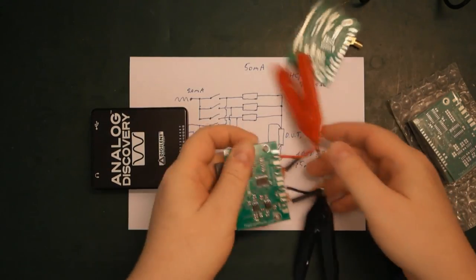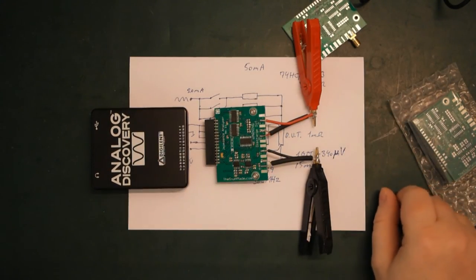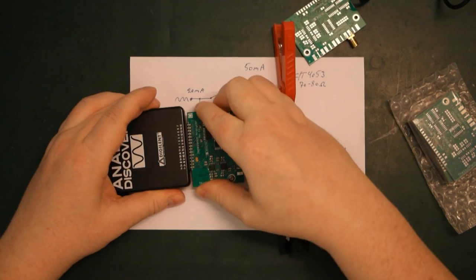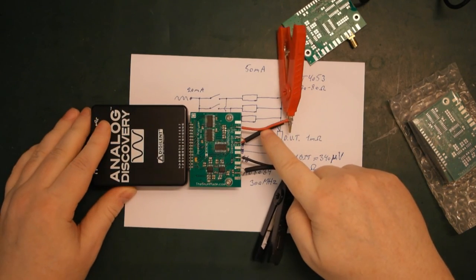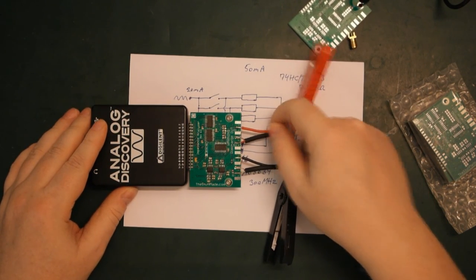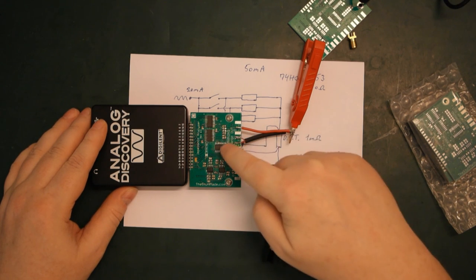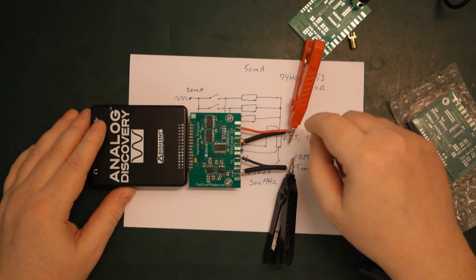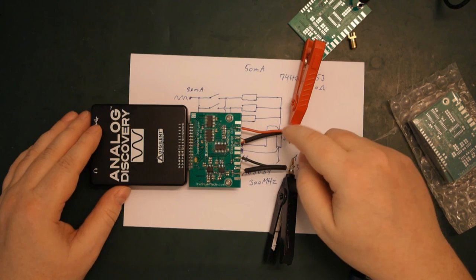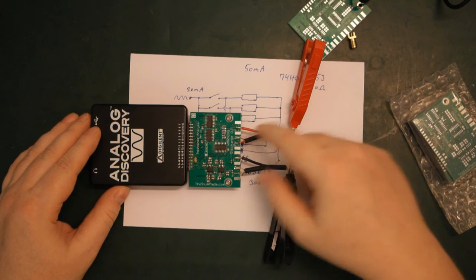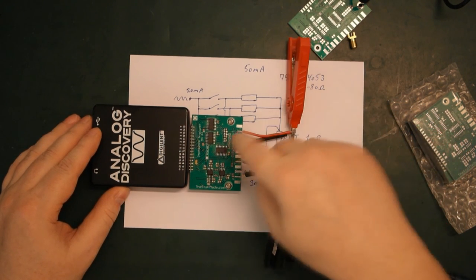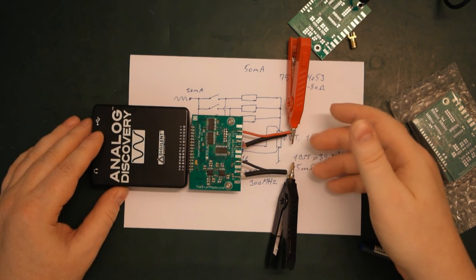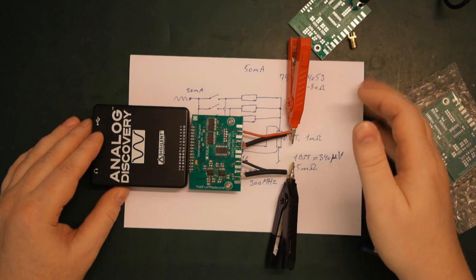So one thing that is quite important is to keep the leads here fairly short. So I do calibration and it will remove most of the inductance, or it will calibrate out the inductance and the capacitance from cables, etc. But since we are limited on the signal level...